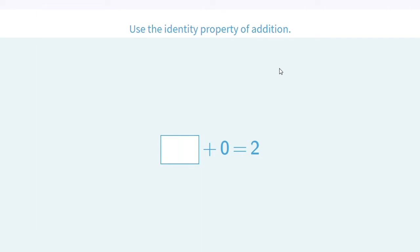Okay, so the first question says use the identity property of addition. Identity property means any number plus zero equals that number. Well, we're missing that number over here. But using the identity property, all I need to do is take my sum, my answer, and put it here. Because two plus zero equals two.